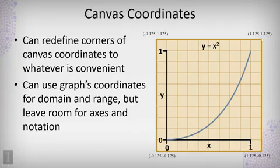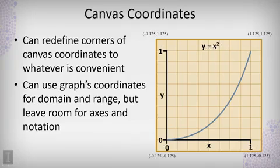Moving one-eighth of a unit in puts us at the point (0, 0) in the coordinate system, and we can draw the plot going from (0, 0) to (1, 1). There's an additional eighth of a unit surrounding the plot in order to add metadata like the title of the visualization and to draw and label the axes.